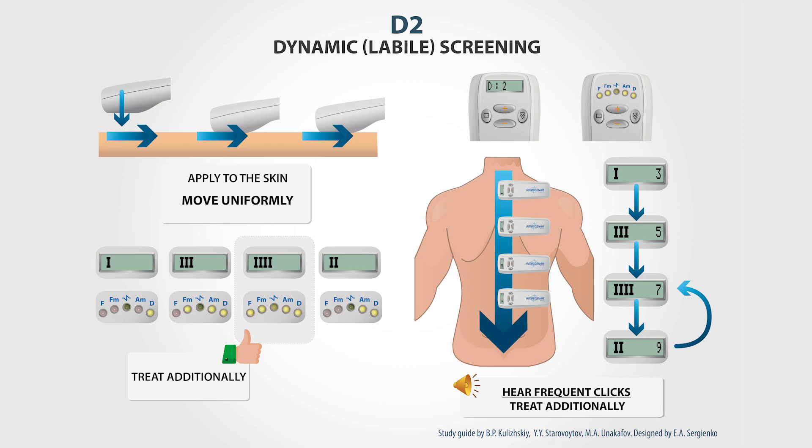You can also identify the optimal point by sound. This feature is the same for both device models. As soon as the device electrode covers the optimal zone with growing dynamics, the device will start clicking. You can use that feature along with the visual indication or separately. The more clicks you hear, the more optimal is the zone.